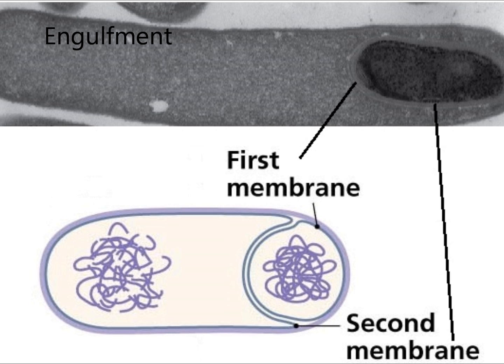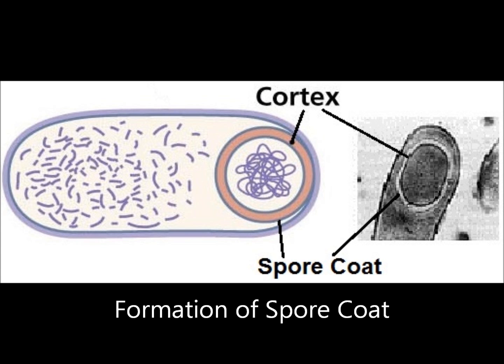During this cell division, a septum made up of two membranes forms. This separates the larger mother cell from the forespore, which contains newly replicated DNA and some cytoplasm. The two membranes close around the forespore, and the mother cell has now engulfed it, creating the endospore.